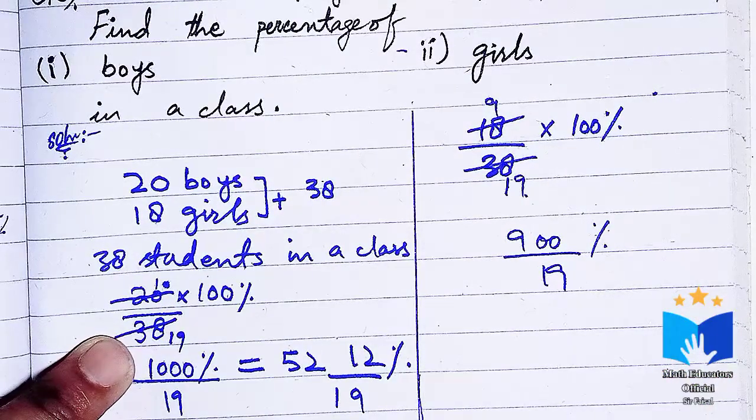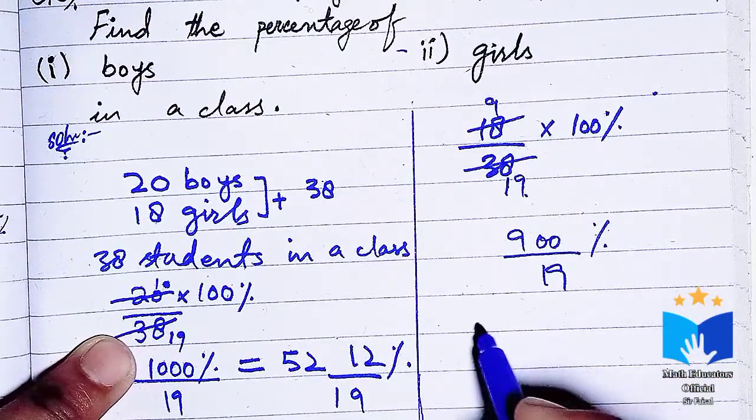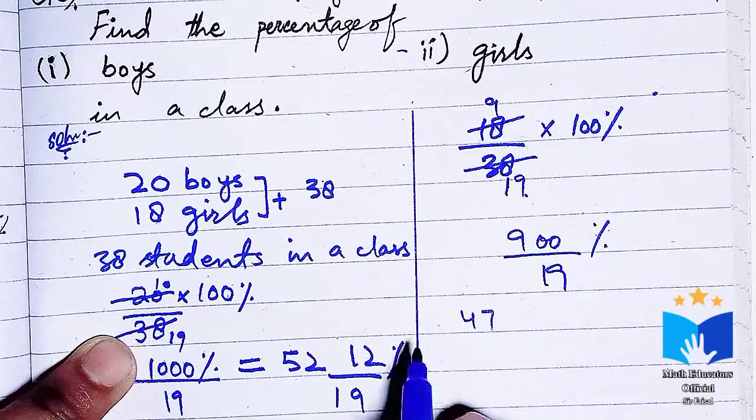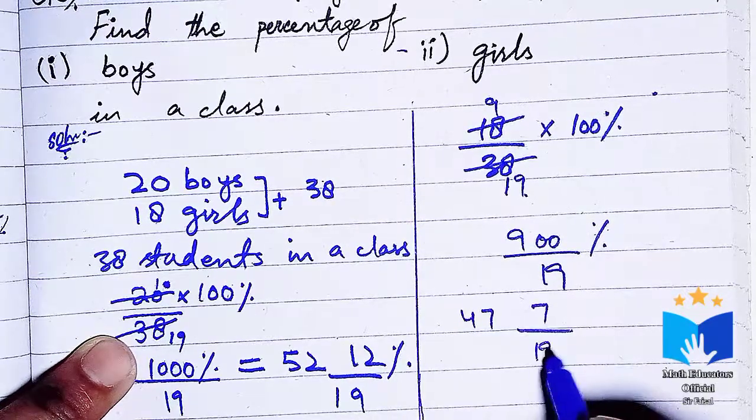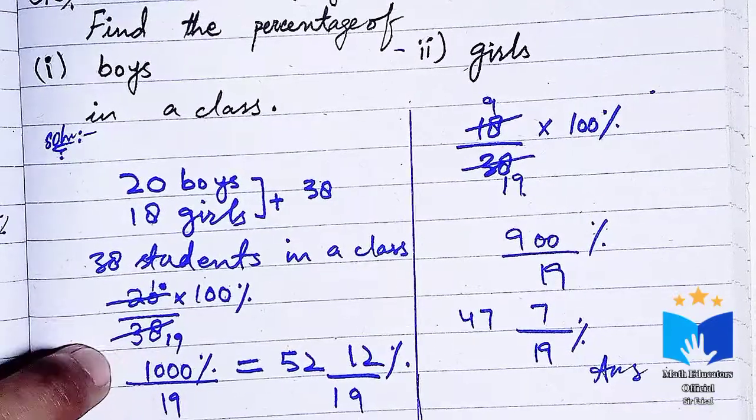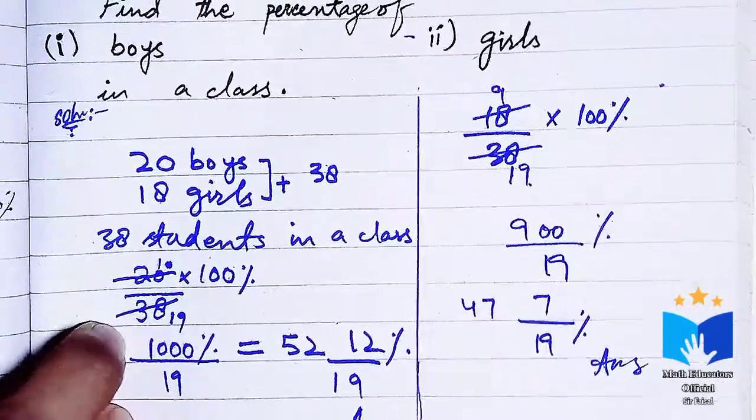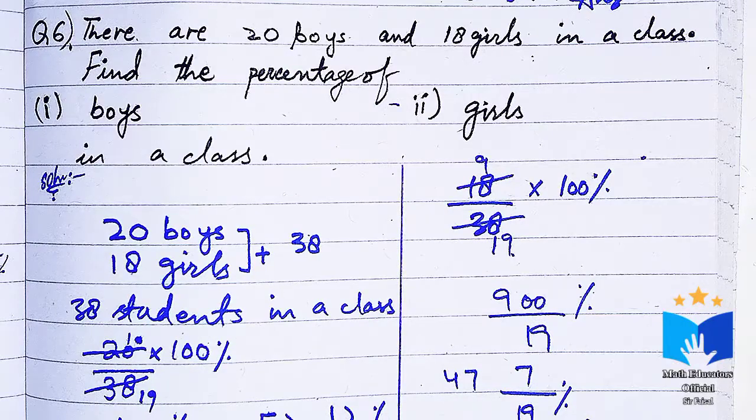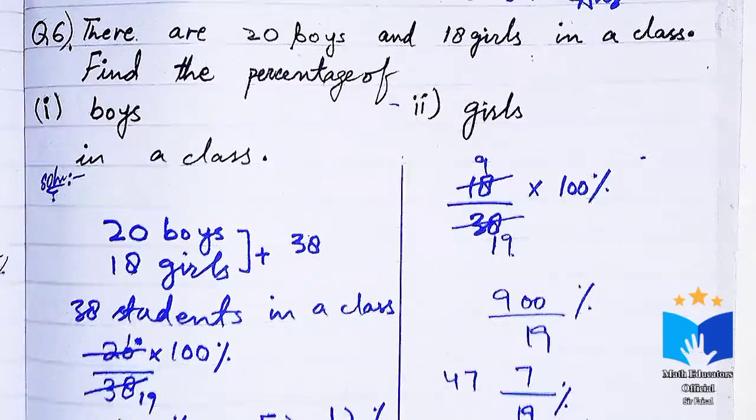When we write this as a percentage, it becomes 47 and 7 upon 19 percent. This is the answer. I hope you understand this question. In the next lecture, we will continue with more questions. Until next time, Allah Hafiz.